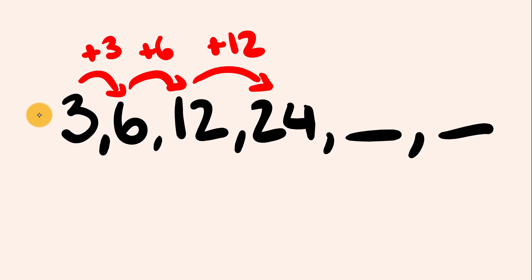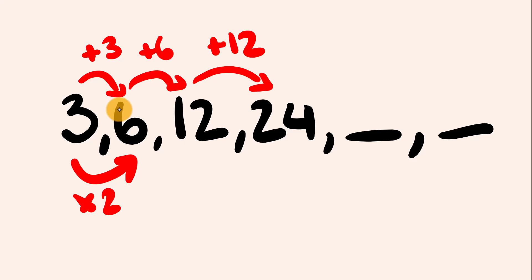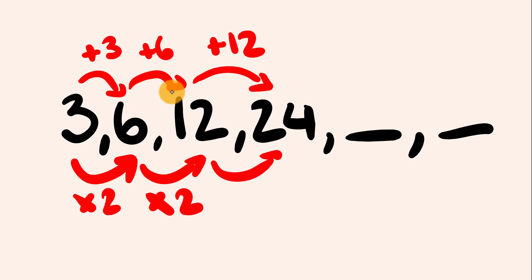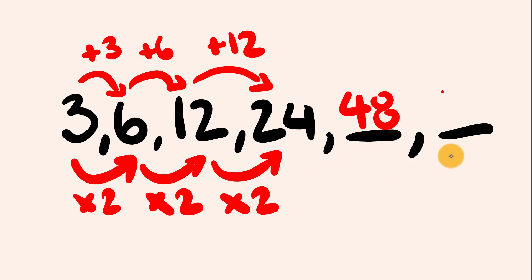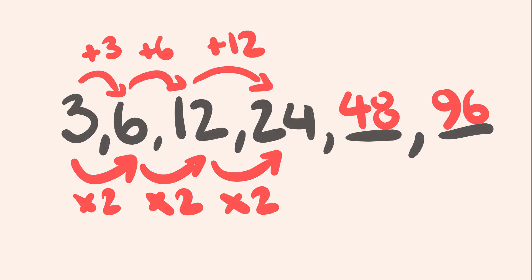From 3 to 6, we're multiplying by 2. 3 times 2 is 6. 6 times 2 is 12. 12 times 2 is 24. This is a geometric sequence — we are multiplying to get to the next term. So 24 multiplied by 2 is 48, and 48 multiplied by 2 is 96. Any sequence where you times or divide is a geometric sequence.